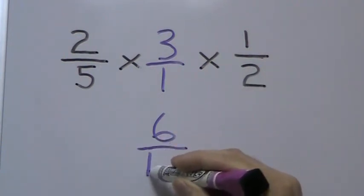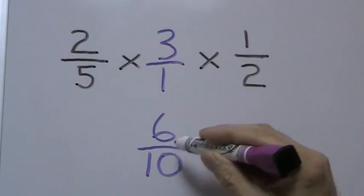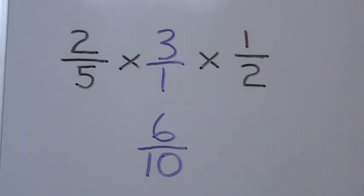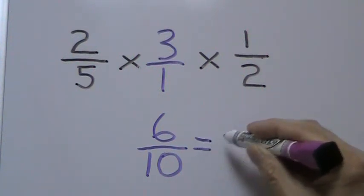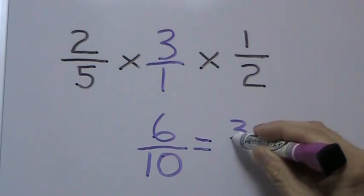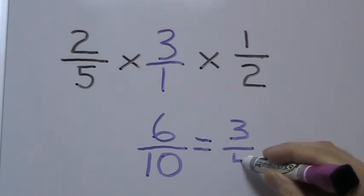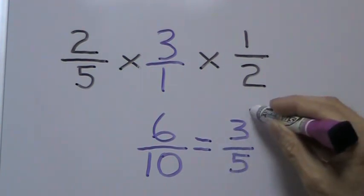We now have a preliminary answer of 6 tenths. Now we can tell that this fraction can be simplified because there are factors that go into both 6 and 10. The greatest common factor for these two numbers is 2. We divide both sides by 2 and we're left with our final answer of 3 fifths.